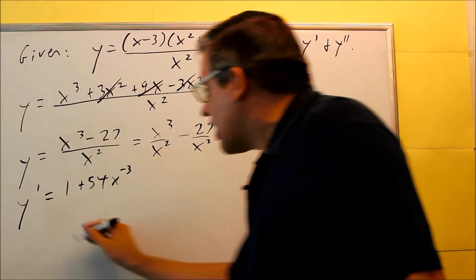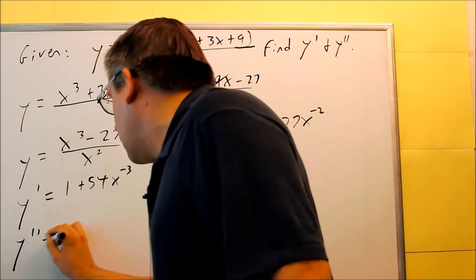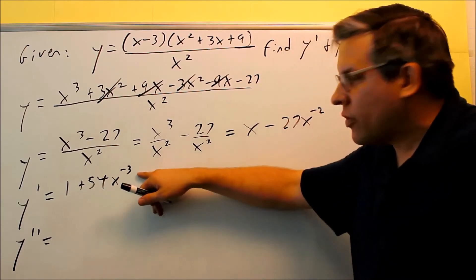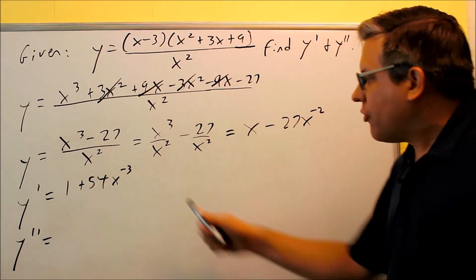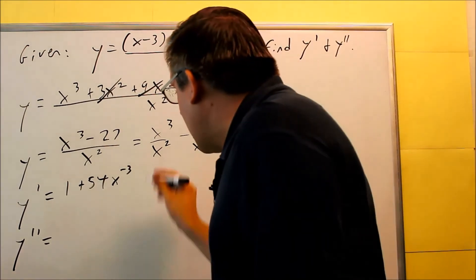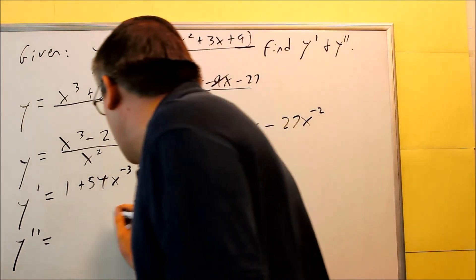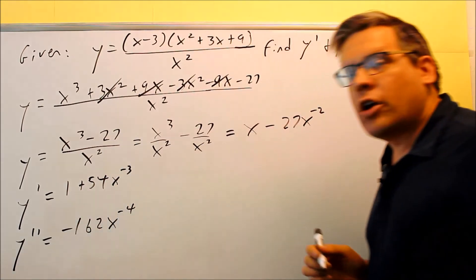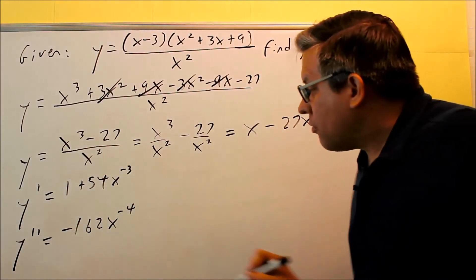I'll rewrite this in a second. Right now, I'll go ahead automatically and do the second derivative. So I'm taking the derivative of the first one. Derivative of 1 is 0 for this. The negative 3 comes down, multiplies by the 54, and when you do that, you're going to get negative 162x, and then we subtract 1, and you get minus 4.